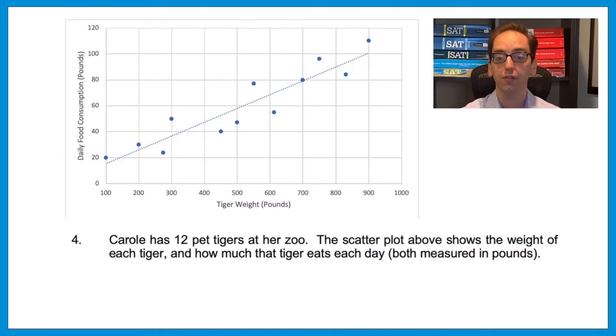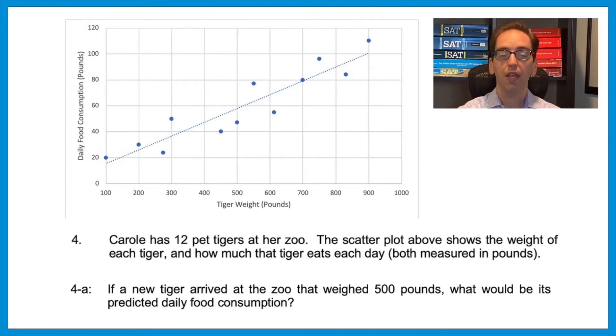Here's a question with a few moving parts. Carol has 12 pet tigers at her zoo. The scatter plot above shows the weight of each tiger and how much that tiger eats each day, both measured in pounds. So if we look at this graph, the x-axis is the weight of a tiger, and the y-axis is food consumption, how much that tiger eats. This is called a line of best fit, or a scatter plot. All of the dots represent the actual tigers, but the line in between all the dots give the estimated or predicted value. So question 4a.